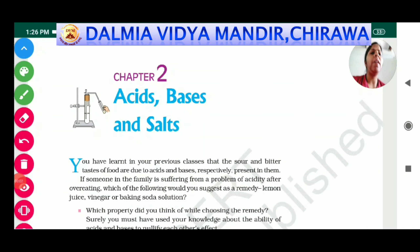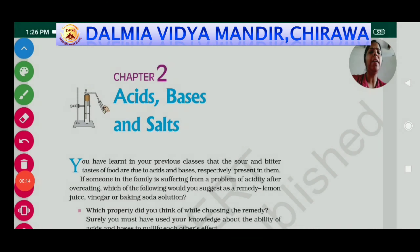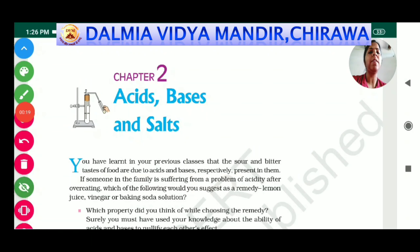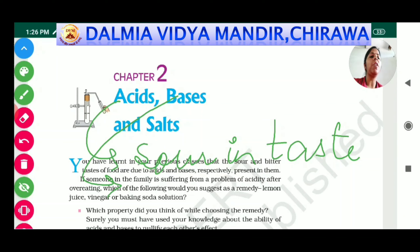Today we will start our lecture on acids, bases, and salts. First, let's define what an acid and a base are. As we have already studied in lower classes, an acid is defined as a substance which is sour in taste. Bases are those substances which are bitter in taste.